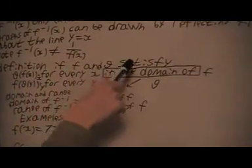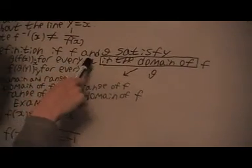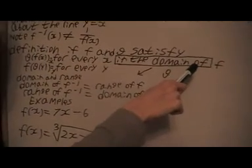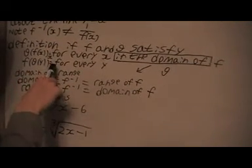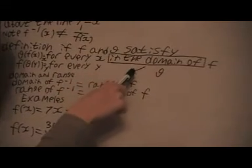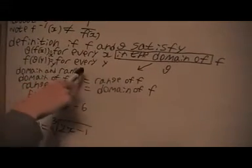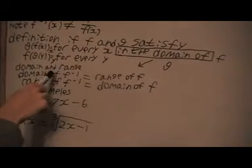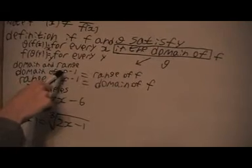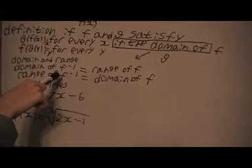And here's the definition. If f and g satisfy, this is x here, for every x in the domain of f, and this is true for every y in the domain of g. And the domain and range of inverse functions: the domain of the new inverse function is the range of the original function, and the range of the inverse function is the domain of the original function.